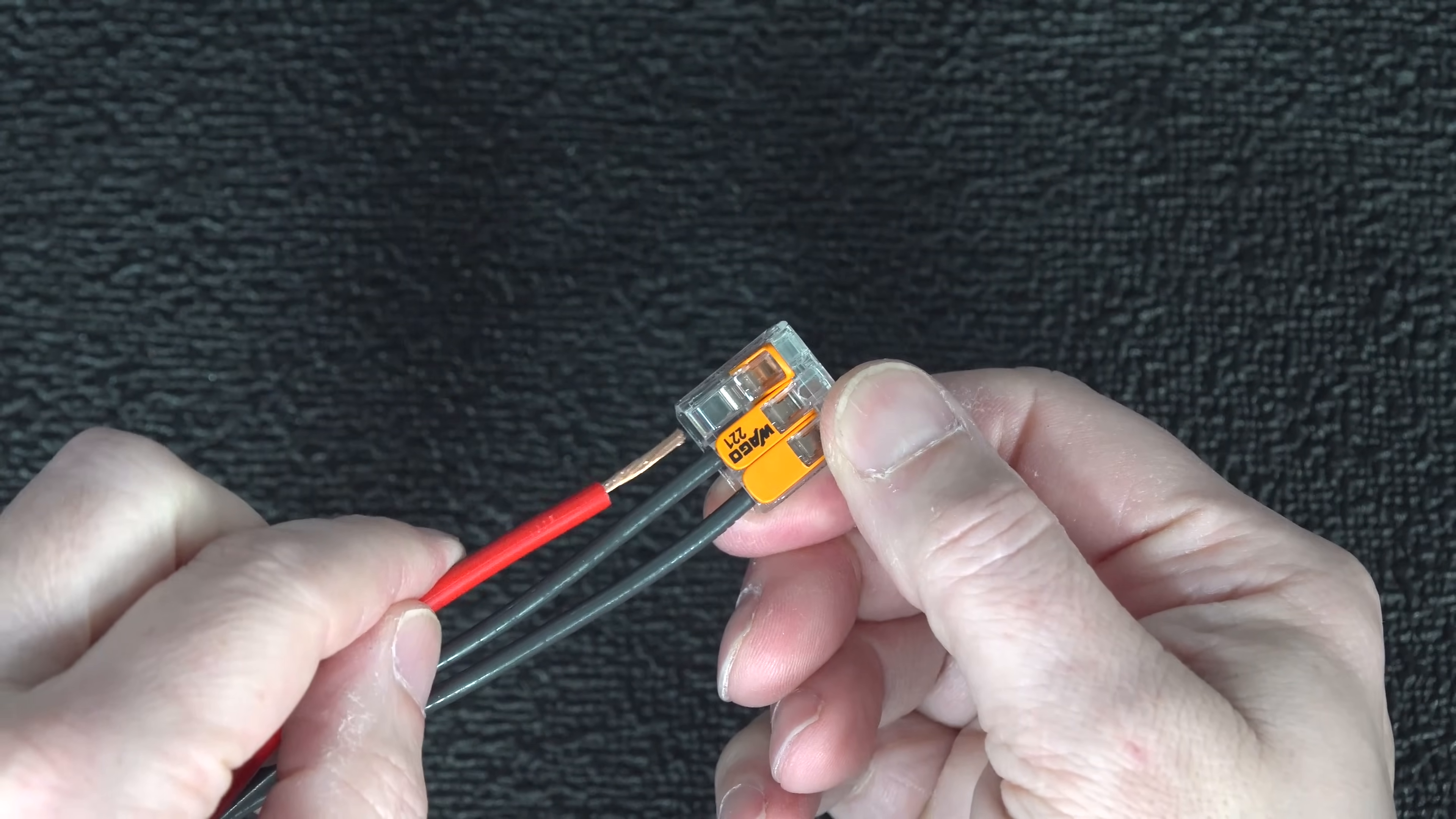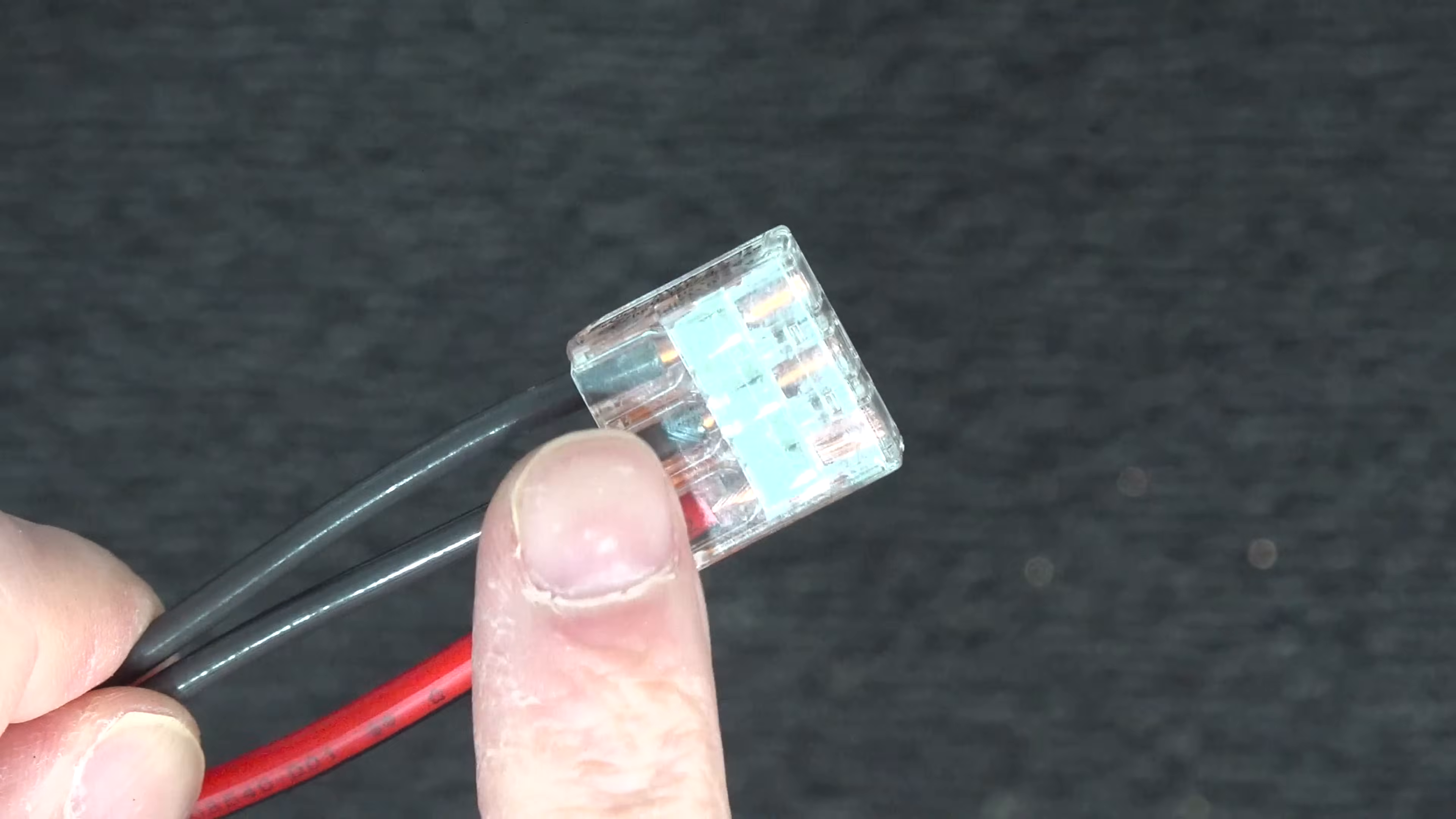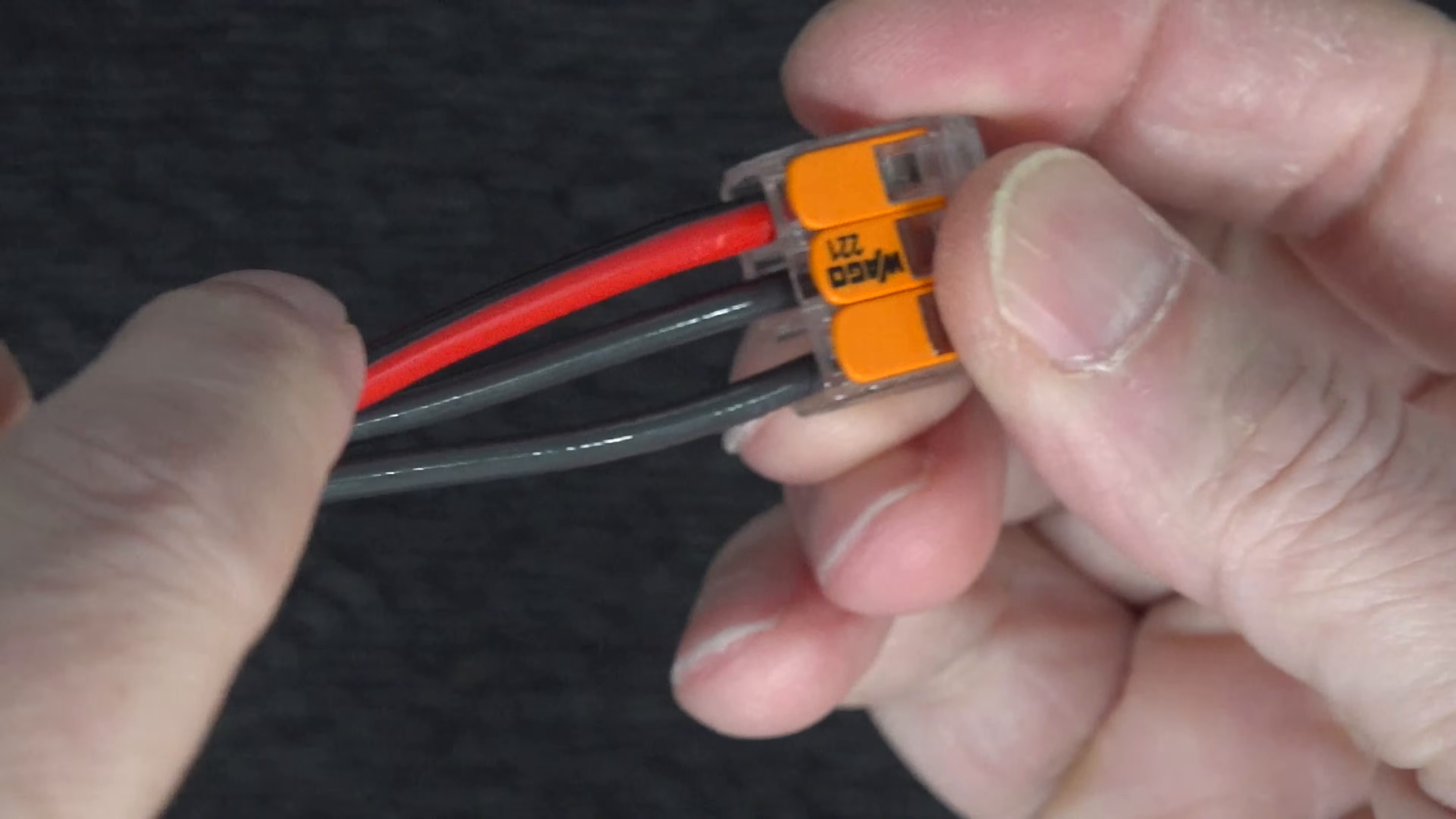But these connectors have two other features that many people aren't even aware of. First is that you'll always know that you've got a good connection, because you can see right inside the connector. This gets rid of all the guesswork. You can see your wires inside, and you want to make sure that the copper conductor goes all the way to the end of the connector. And you don't want any wire extending past the opposite end. That should just be insulation.